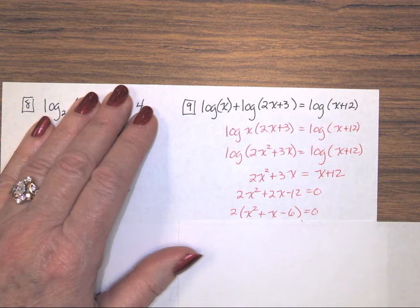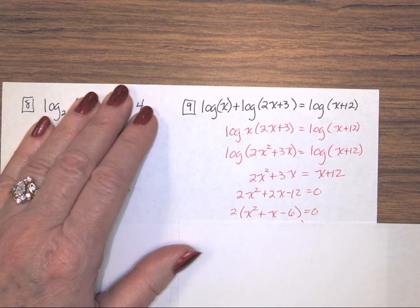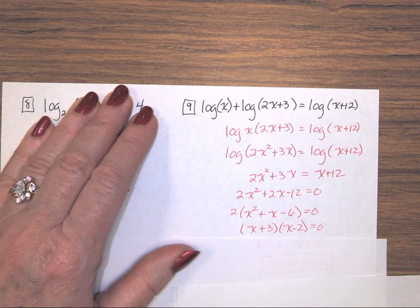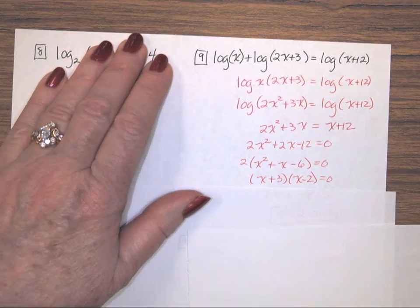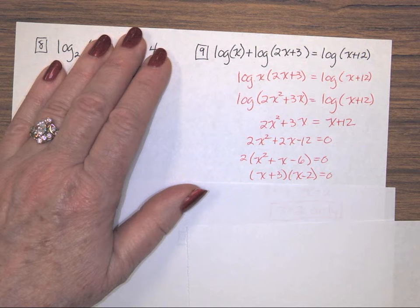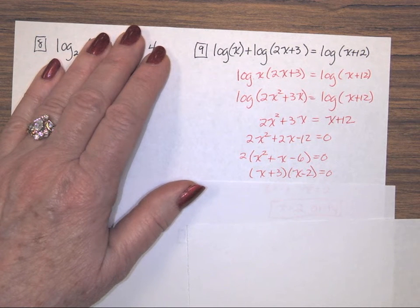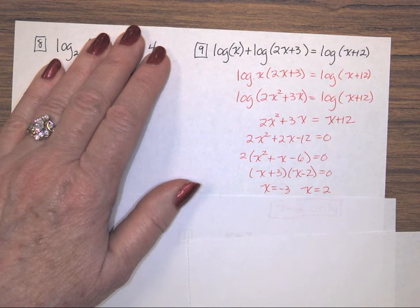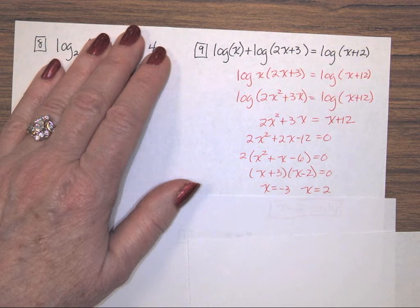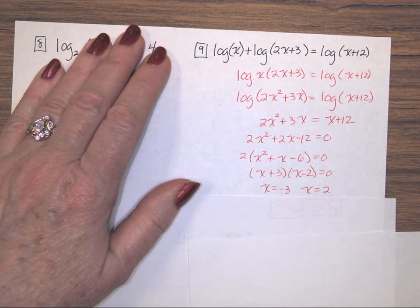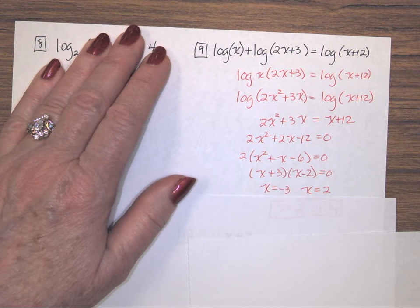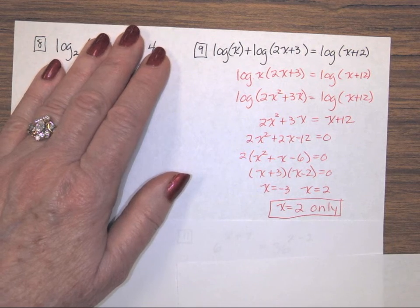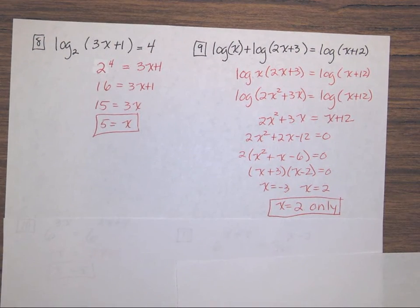There's a common factor of 2 to factor out. Once I factored that out, that trinomial factors as x plus 3 and x minus 2. When I set those equal to 0 and solve, I get negative 3 and a 2. But that x equals negative 3 is extraneous, so the only good answer from this problem is x equals 2.